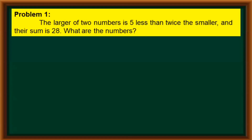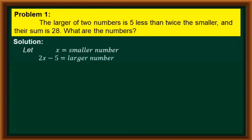Let's now have the solution to this problem. First, we let x be equal to the smaller number, and 2x minus 5 be equal to the larger number, since it is stated in our problem that the larger is 5 less than twice the smaller number.